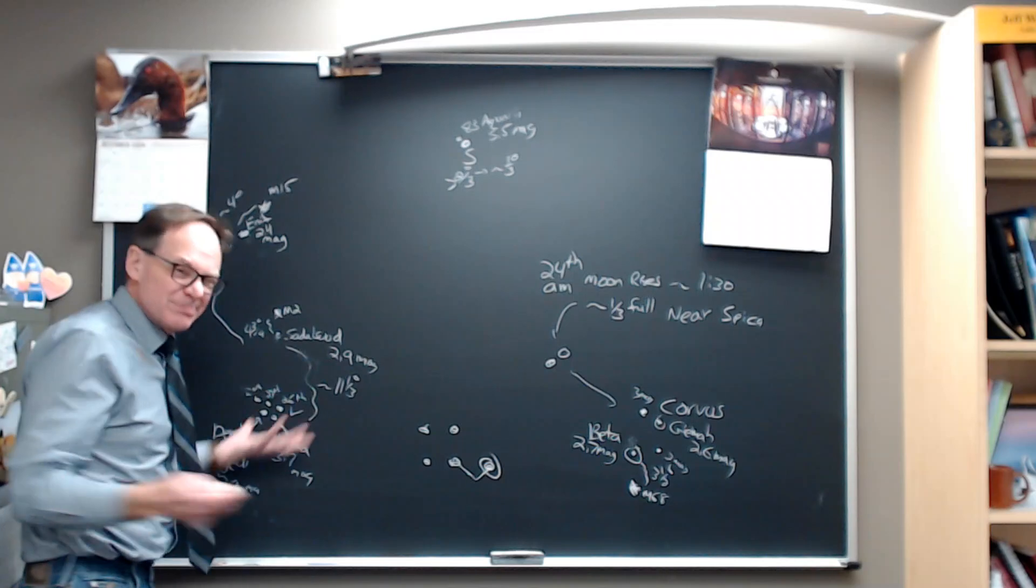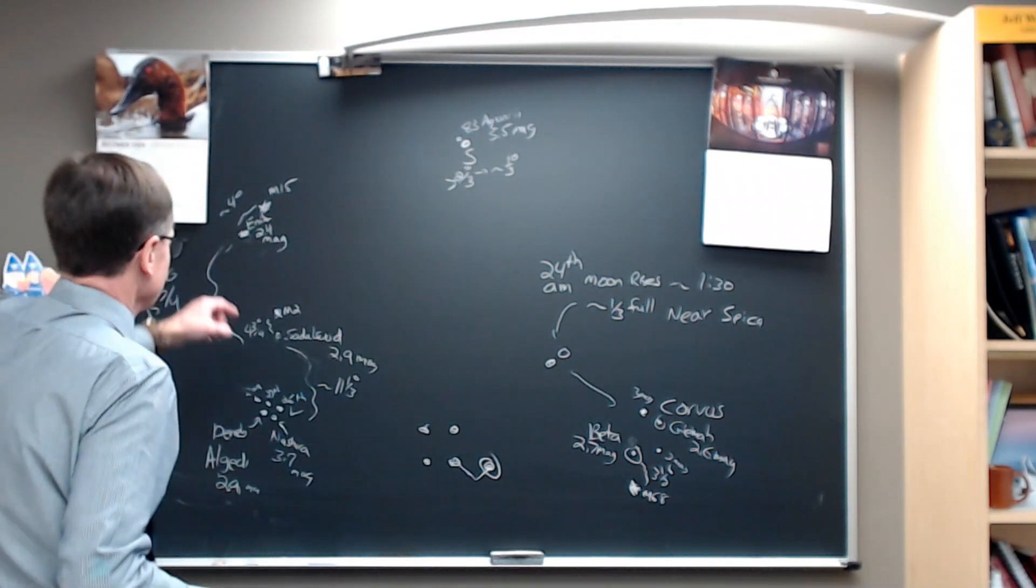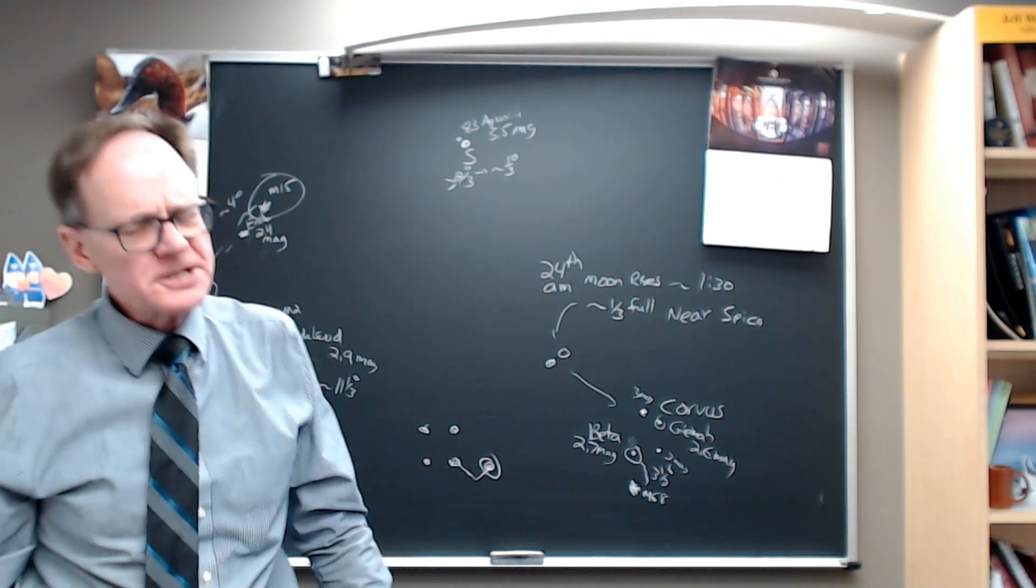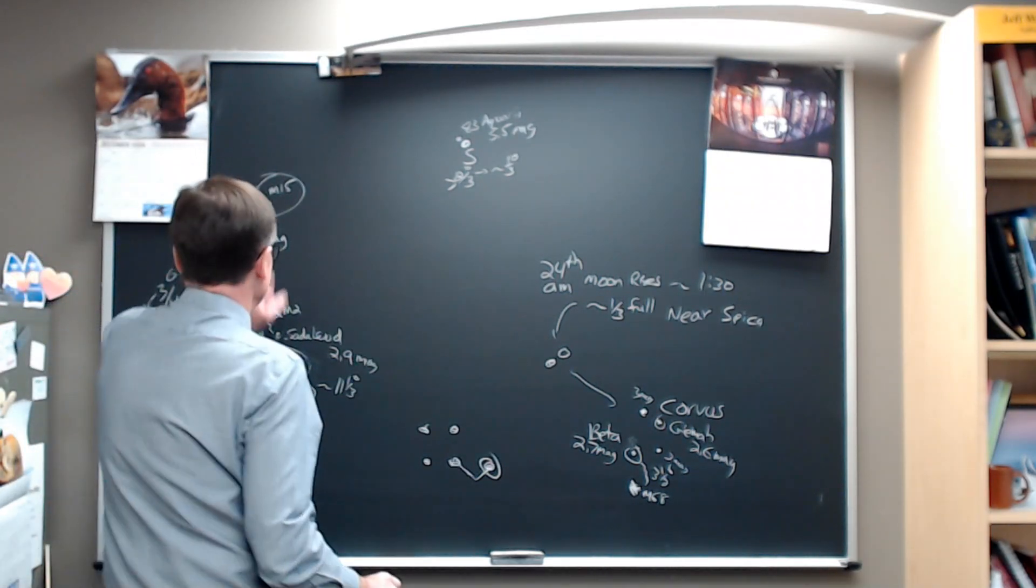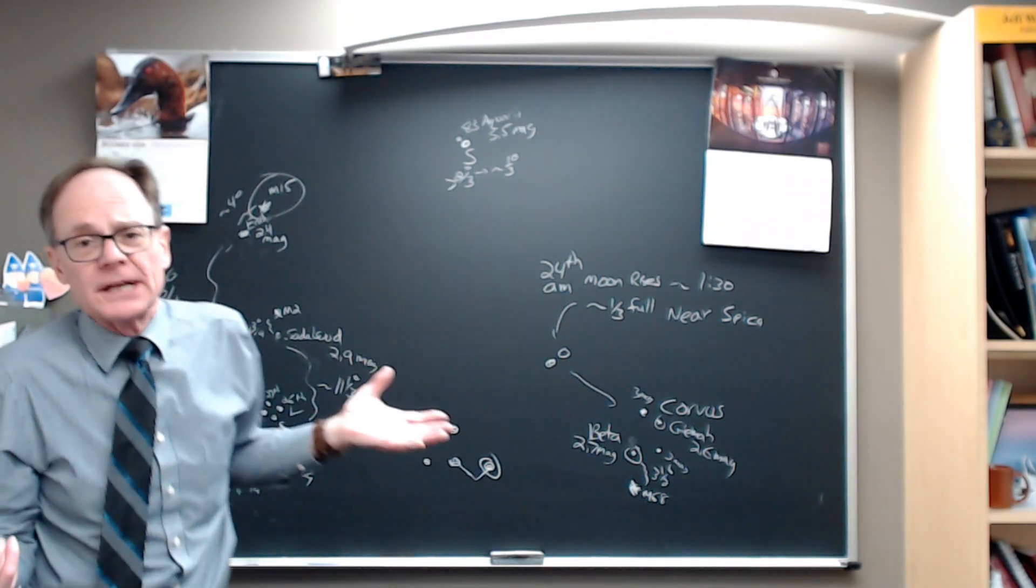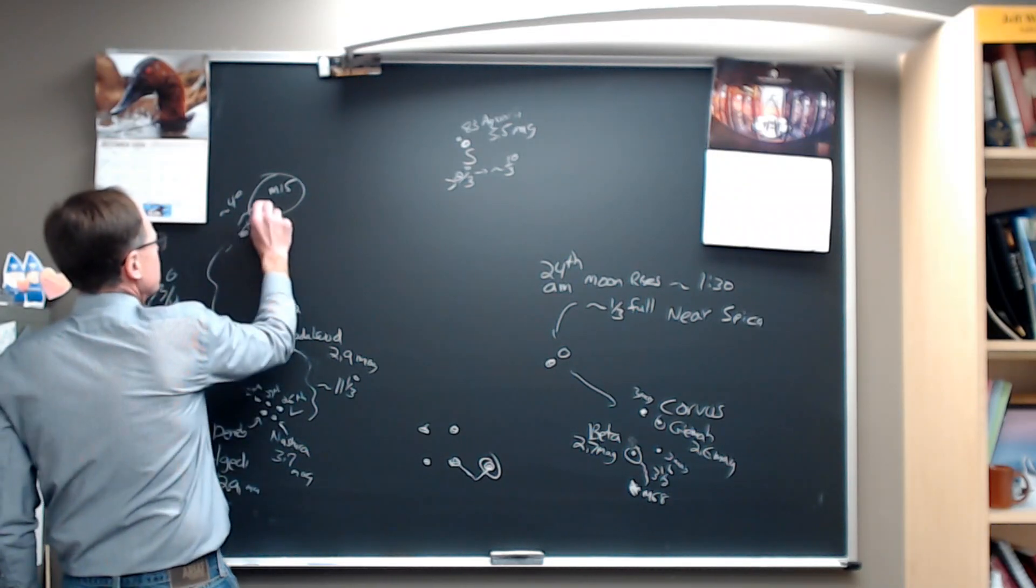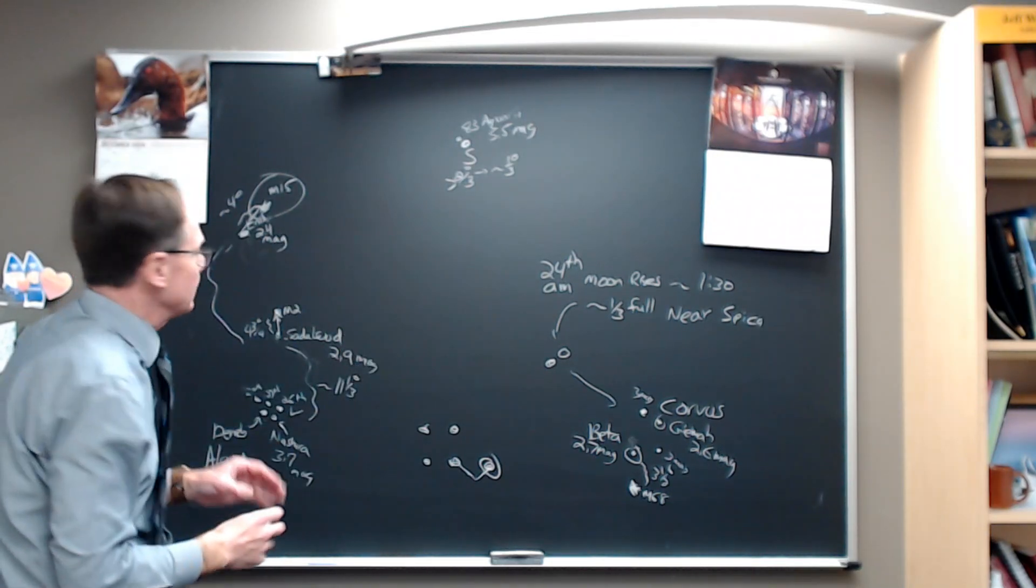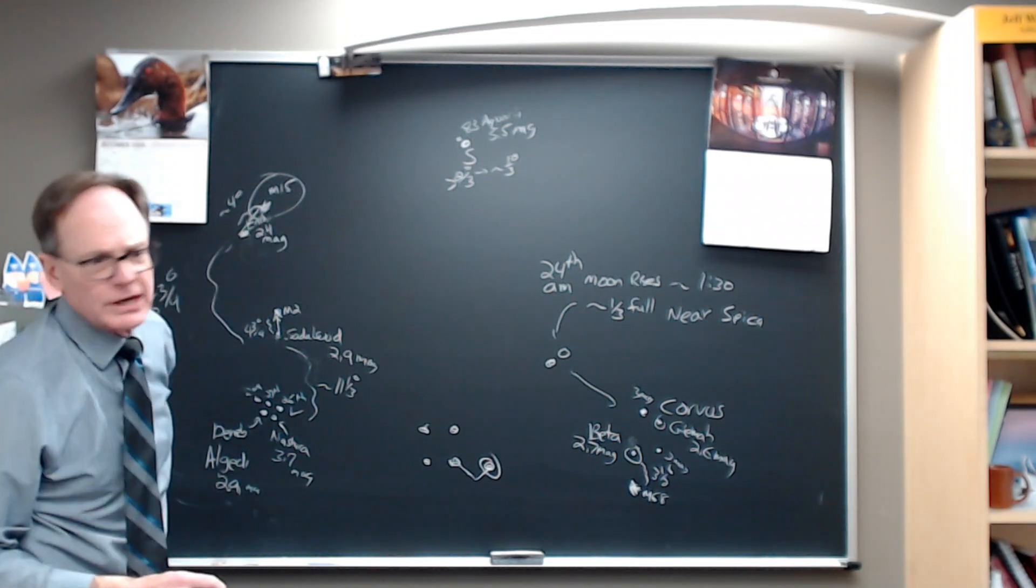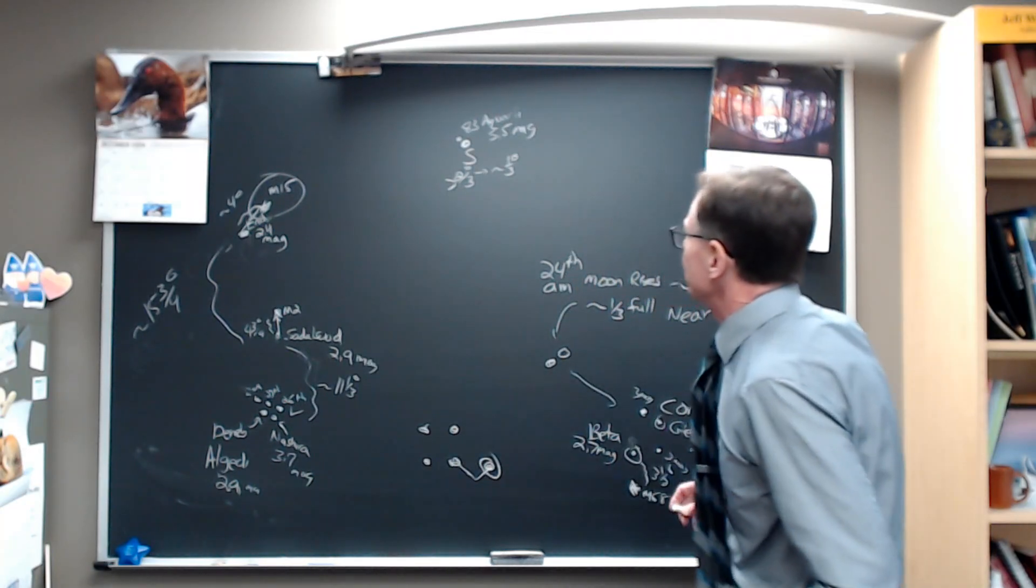And now another 4 to 6 degrees to the north and the west of Enif, is globular star cluster M15, another spectacular globular star cluster. Binoculars should show it as a fuzzy patch if you've got good dark skies. You've got a small telescope, by all means scan with your telescope from Sadal-Sut up to M2, and from Enif up and across to the west to M15.